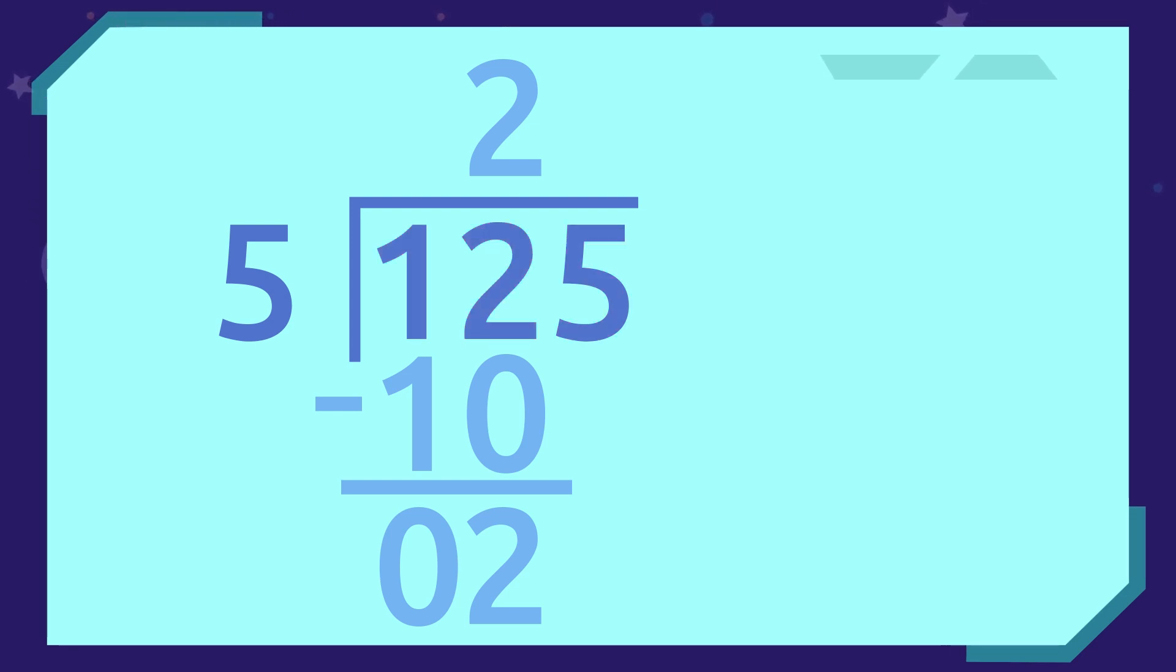Now, we bring the next number down from the dividend to get 25, which we will again divide by 5. What number multiplied by 5 gives us 25 or is very close?